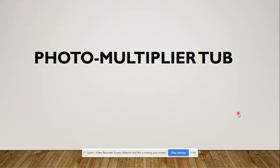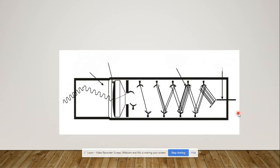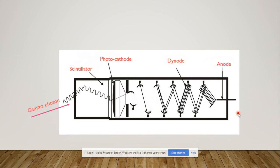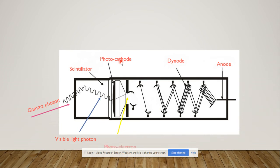The next component is the photomultiplier tube, which consists of a scintillator, a photocathode, a series of dynodes, and an anode. When the gamma photon hits the scintillation crystal, it converts into visible light photons due to the Compton effect. These visible light photons then go towards the photocathode, which converts the photons into photoelectrons.